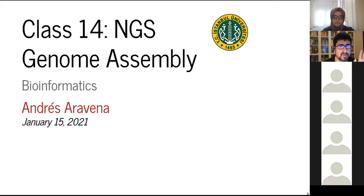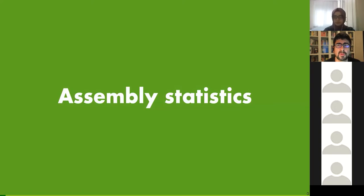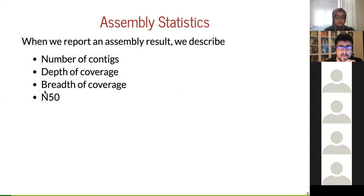Last class we spoke about genome assembly. Today the basic idea is how you read a report about an assembly. You are probably going to read papers where they say 'we assembled the genome of coronavirus.' That report will have at minimum: the number of contigs, the depth of coverage, the breadth of coverage, and the N50.